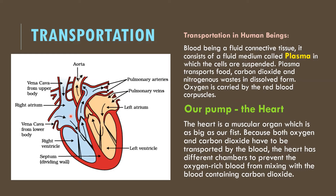Once the blood is collected, the valves open, the atrium relaxes, and the ventricles expand to collect all the blood. From the ventricle it is taken to the pulmonary arteries. At this point the valves are closed, and this deoxygenated blood is carried by the pulmonary arteries to the lungs.